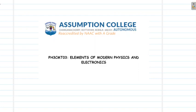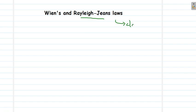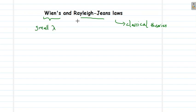In this video we will discuss how Planck's formula reduces to Wien's formula at shorter wavelengths and to Rayleigh-Jeans formula at larger wavelengths. We have already seen Wien's law and Rayleigh-Jeans law — these are classical laws developed to explain black body radiation. These theories were somewhat successful in explaining black body radiation at certain ranges of wavelengths. For example, Wien's theory was successful in explaining black body radiation at small wavelengths.